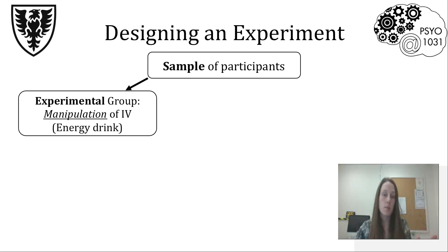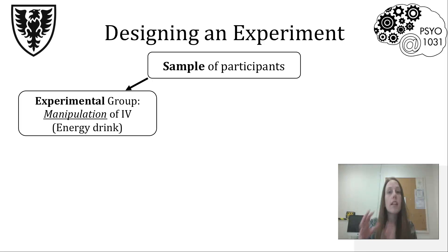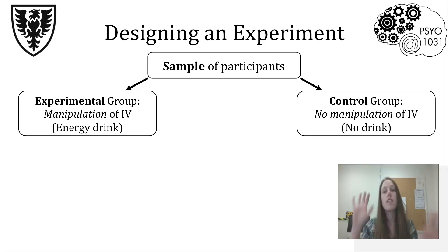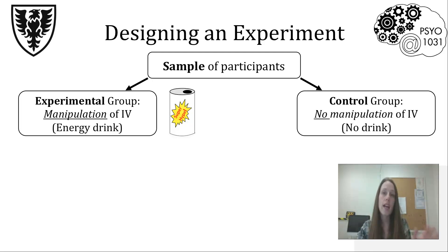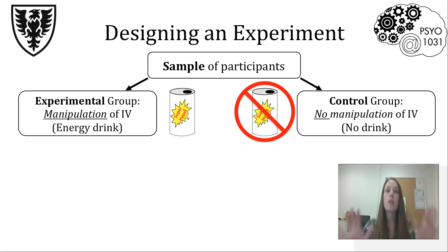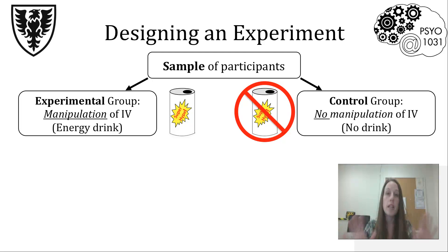We're going to take some participants and put them in what's called the experimental group — the group where we're actually changing things. This is the group that's going to get the energy drink. The other group is put into something called the control group — the group where nothing is changed, so we can see if the group we changed things in shows anything different from the group that stayed the same. The experimental group gets the energy drink; the control group gets nothing.